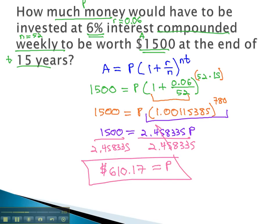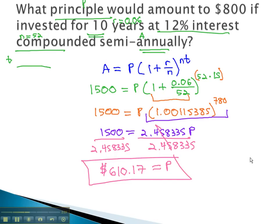Let's take a look at another example, where we seek to find the principal, or starting investment. Again, the formula for compound interest is A = P(1 + r/n)^nt.